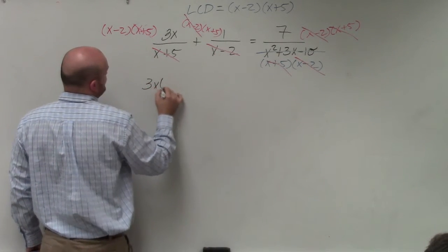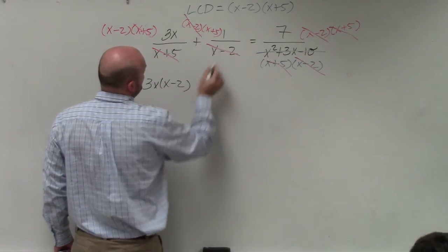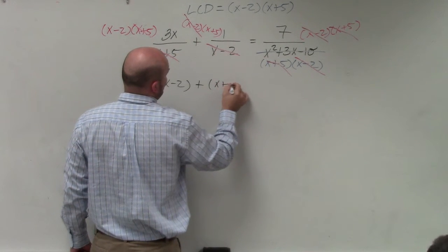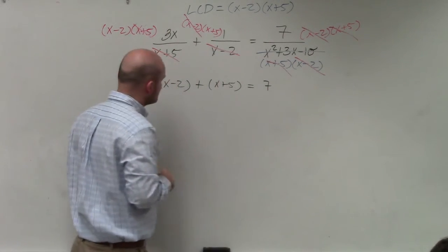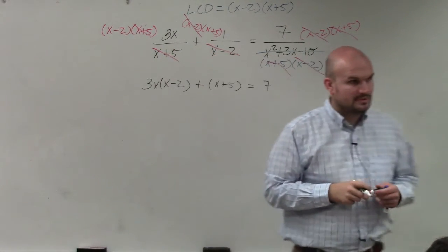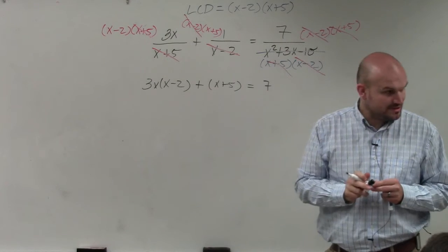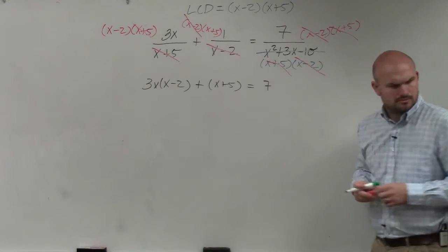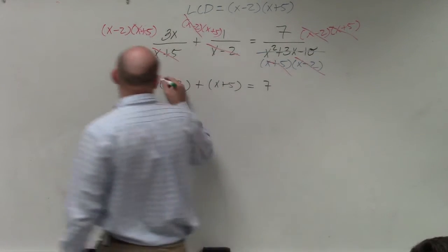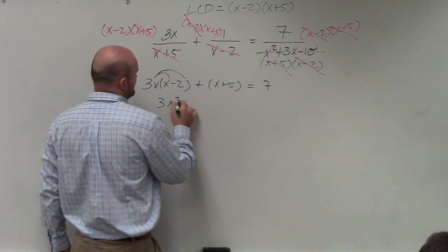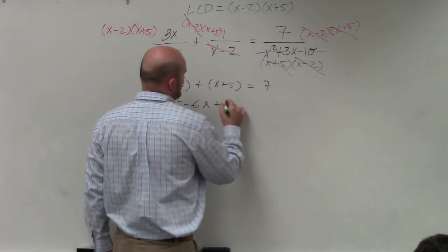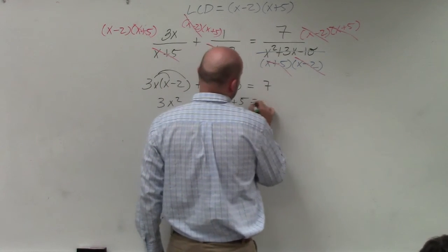I have 3x times x minus 2. I have plus x plus 5. And then I have 7. Correct? Yes? No? Maybe so? OK. So I apply the distributive property here. I get 3x squared minus 6x plus x plus 5 equals 7.